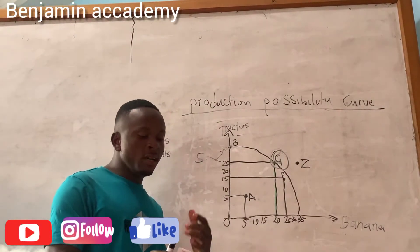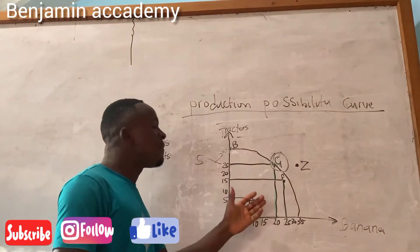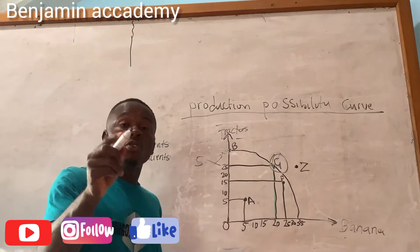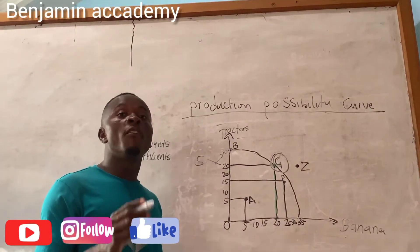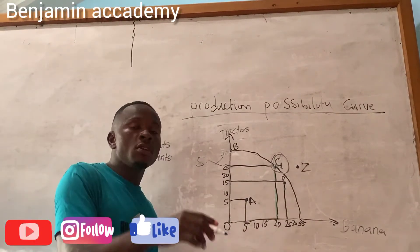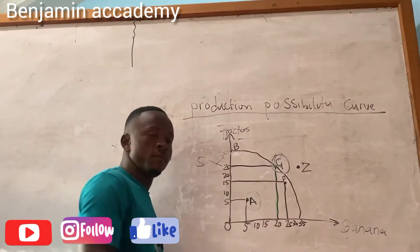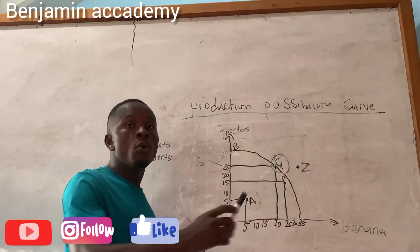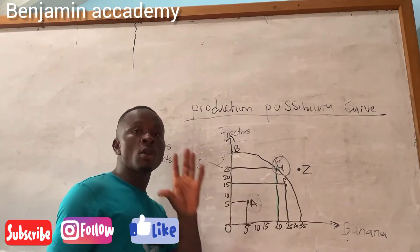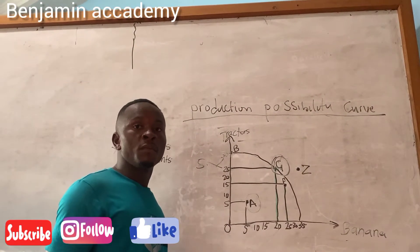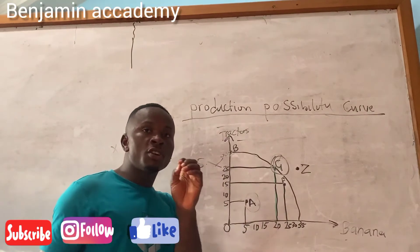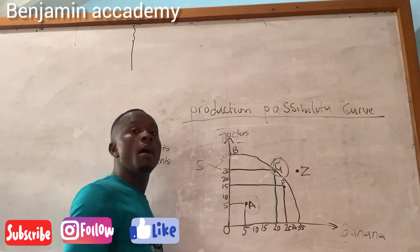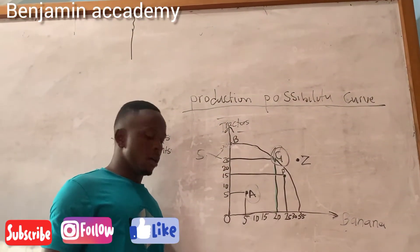Point 2: at what level will the country be using an inefficient method of production? The country will only be using an inefficient method of production when the level of technology is low, which is at point D or point A. At point A, the level of technology is low, the population size is low, and the level of economy is low.